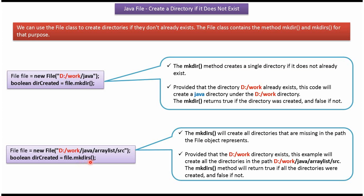The makeDirectories method will create all directories that are missing in the path the file object represents. In this example, assume the work folder is already present in the D drive. Then this makeDirectories method will create the java folder under work folder, the ArrayList folder under java folder, and the source folder under ArrayList folder.